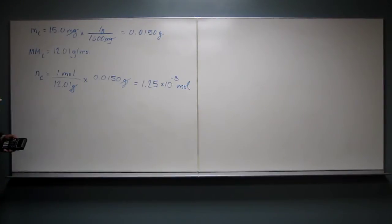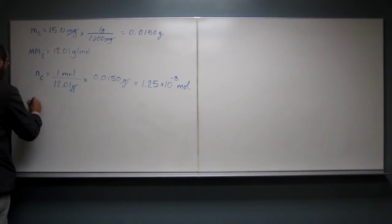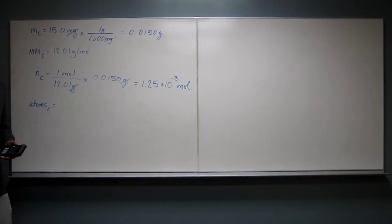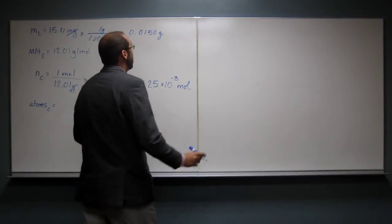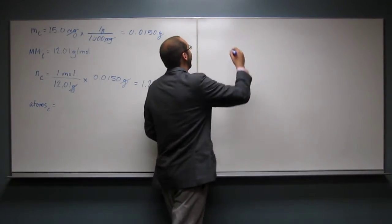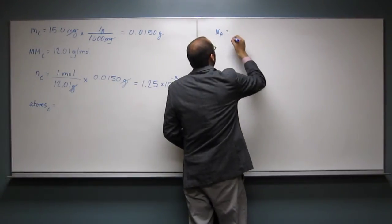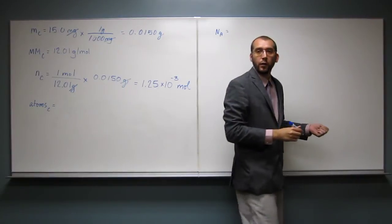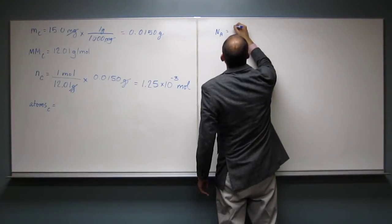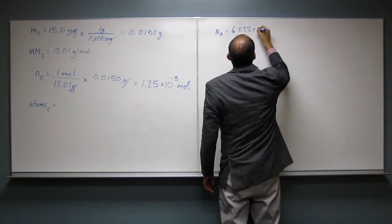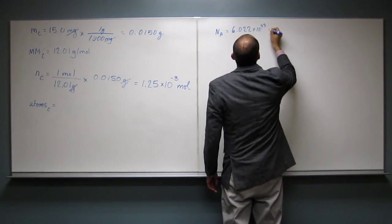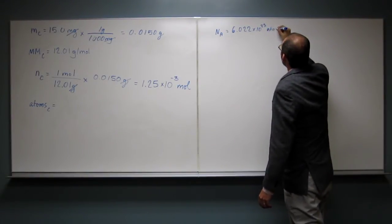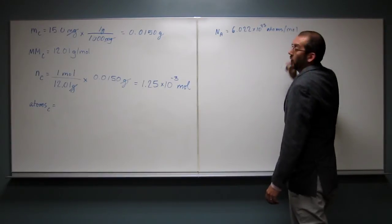But it wants us to figure out the number of atoms of carbon. So atoms, well, we have to remember Avogadro's number. Do you remember Avogadro's number? So that's something you want to remember. I'll actually give it to you on the exam, but you'll have to know when to use it, or the quiz, but you'll have to know when to use it. So Avogadro's number is 6.022 times 10 to the 23rd. And it's whatever per mole. In this case, that many atoms per mole.